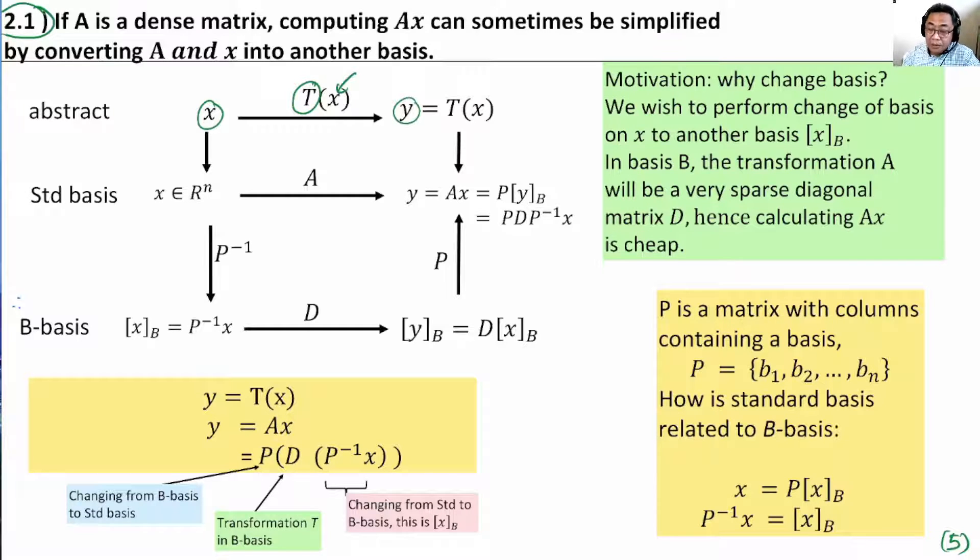We have seen in the previous section that we can represent X in the Euclidean space R^n, and the operation T can be represented by a matrix. The output Y equals AX, where A is M by N matrix, and the input is R^n space, and the output is R^m.